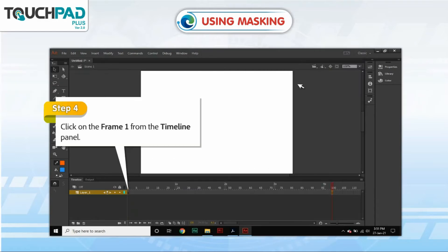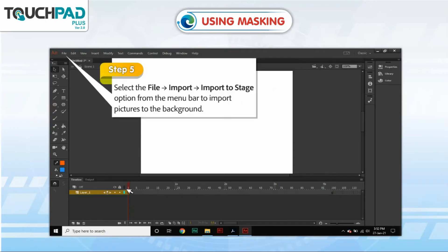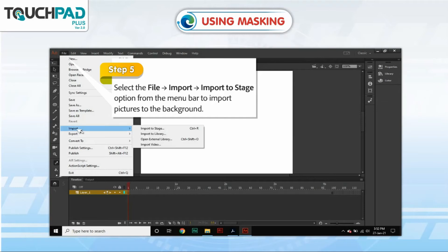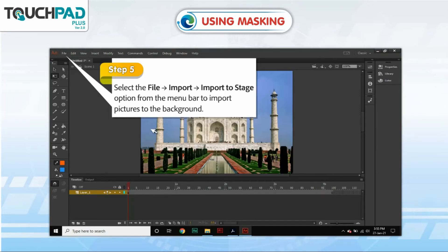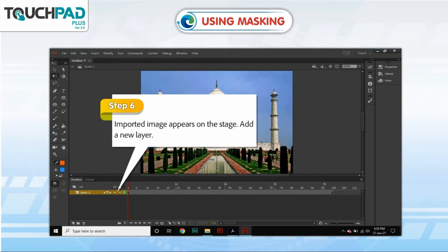Step 4: Click on Frame 1 from the Timeline panel. Step 5: Select File, go to Import, go to Import to Stage option from the Menu bar to import pictures to the background. Step 6: The imported image appears on the stage. Add a new layer.